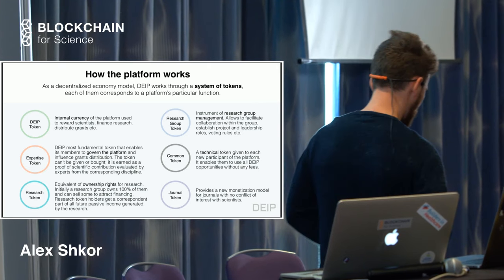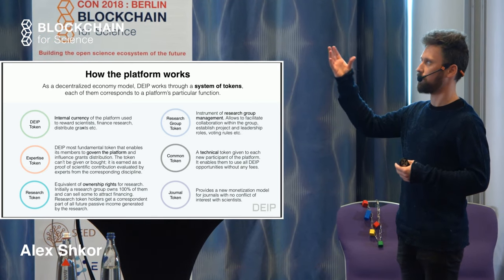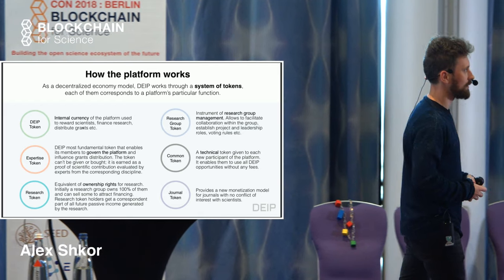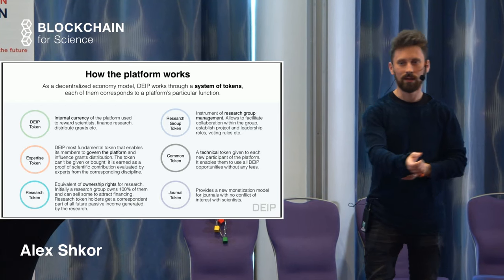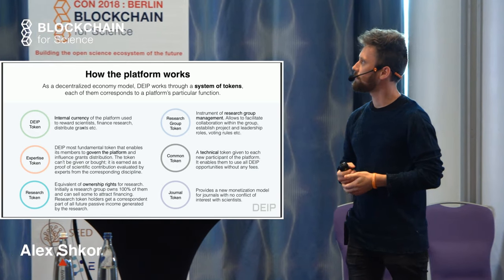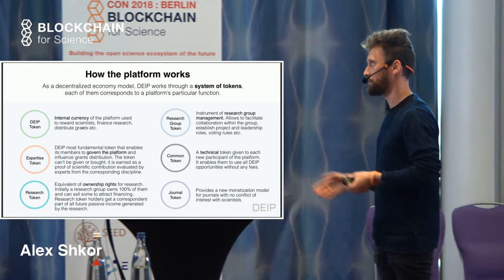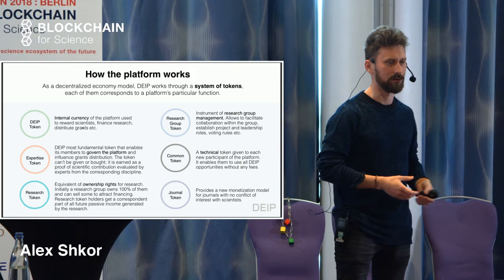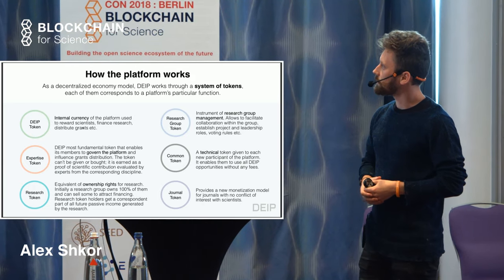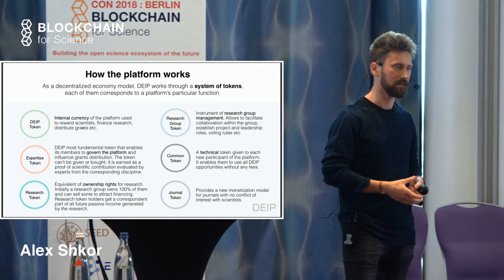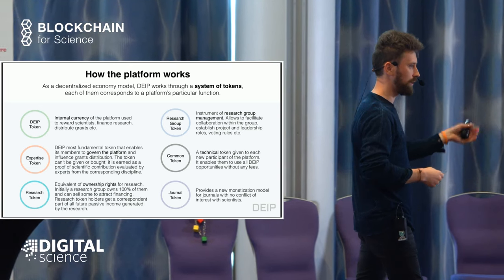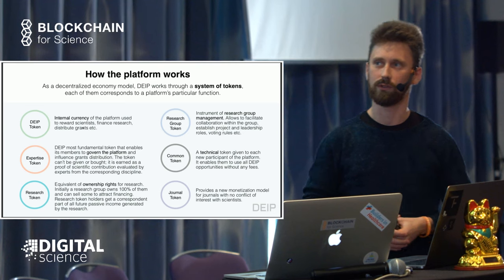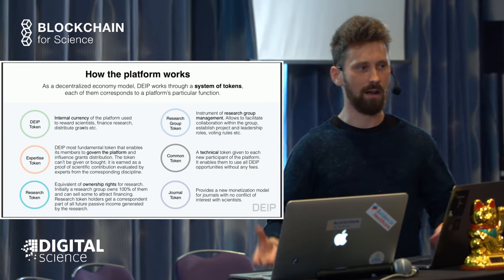Let me start by describing our platform. There are six types of tokens within our system. The first one is the DAPE token — it's internal currency, the most simple one, like a store of value, just money, just currency within the system. Another token is the expertise tokens, which represent scientific contribution and expertise contribution of each individual. This is actually the core of the system — these tokens are used for evaluation of scientific projects and for governance of the whole system.